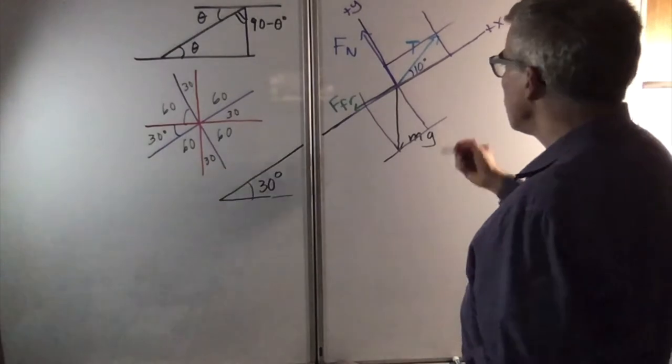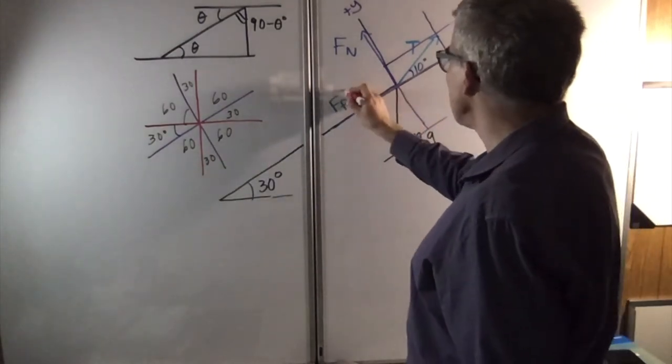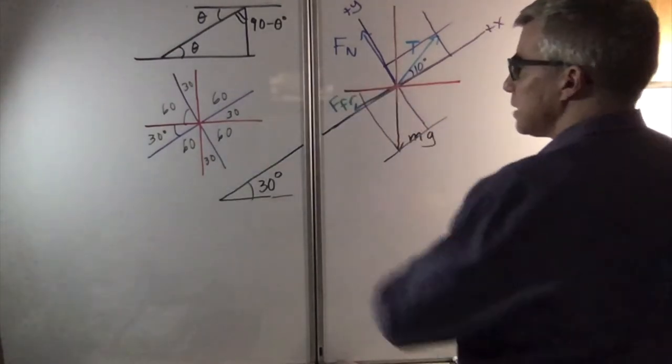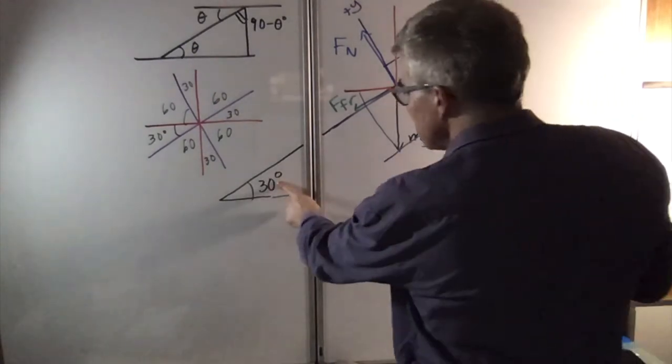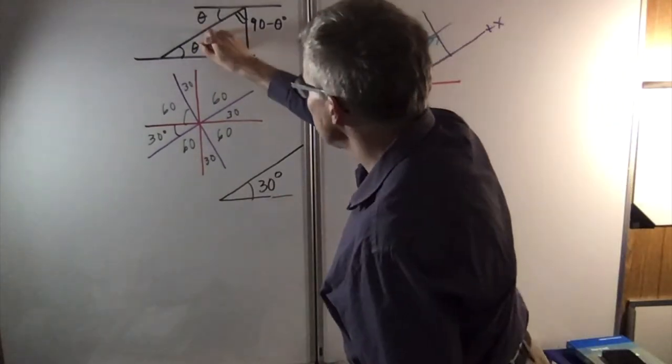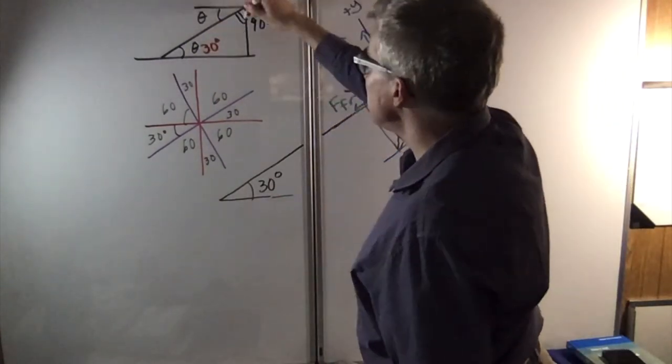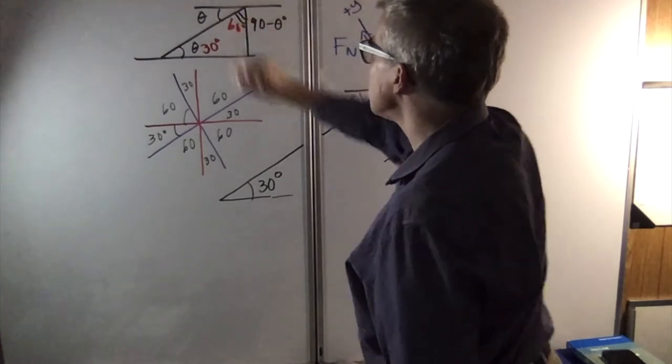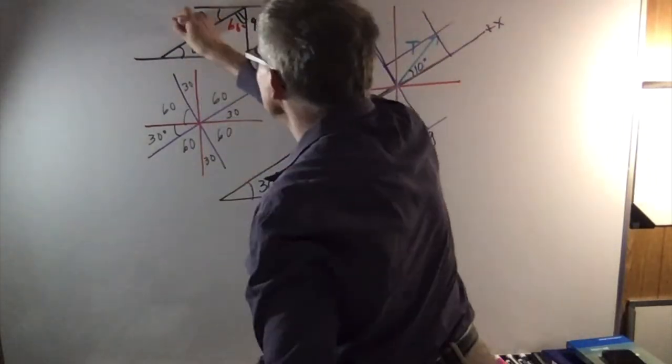At the same time, we can use standard axes, which I'll draw in red for contrast, and I've drawn it here. Because if this is 30 degrees, then that's 30 right there, and this would be 60 degrees, and that would be 30 degrees.